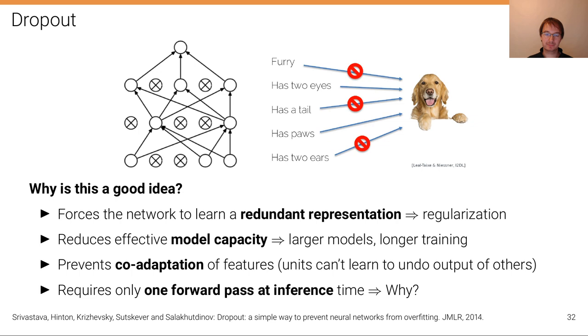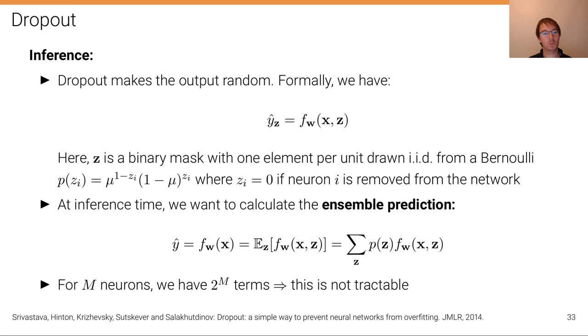And another reason why this is a good idea is that in contrast to these ensemble methods that we've seen before, it as we will see requires only a single forward pass at inference time. So why? Let's first look at the problem. At inference time, well, dropout makes the output random because we have this random mask. So formally we have—or we can write this dropout model as a neural network with parameters w which depends on the input x but also now on this binary mask z that specifies zero and one which neurons are active and which not, and this is our prediction.